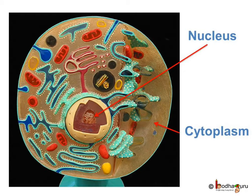There is a round or nearly round dense part in the cytoplasm which is called the nucleus. It is generally spherical and located in the center of the cell. The nucleus is separated from the cytoplasm by a membrane called the nuclear membrane.